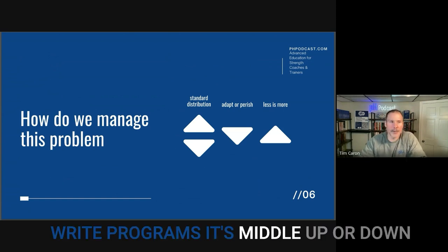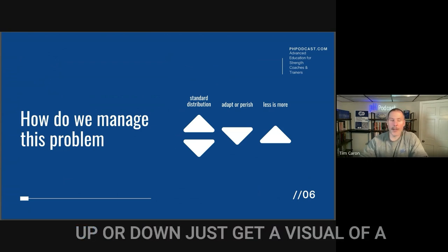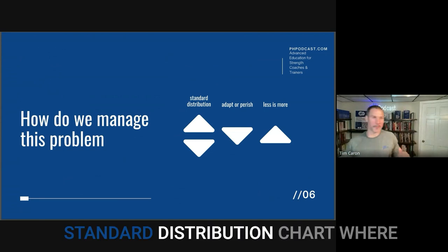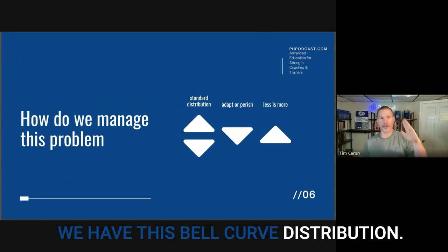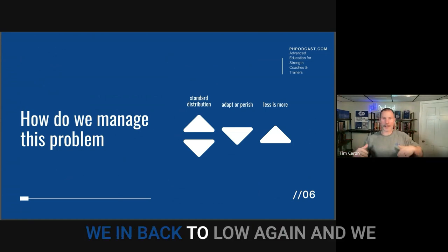It's middle, up or down, top down, or bottom up. The middle, up or down, just get a visual of a standard distribution chart where we have this bell curve distribution. It goes from high to low and back to low again.